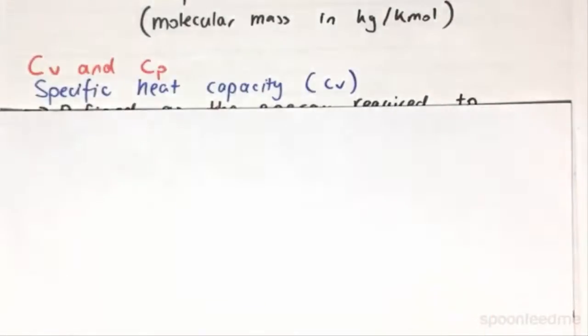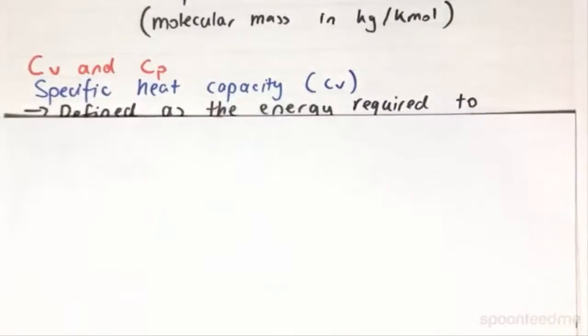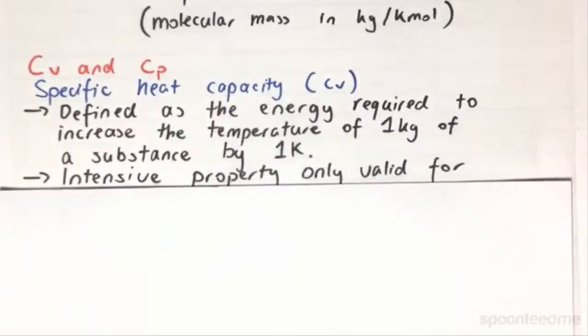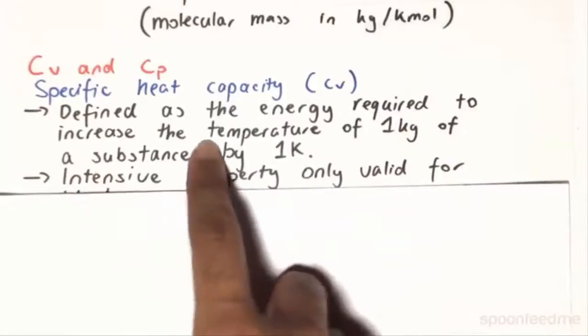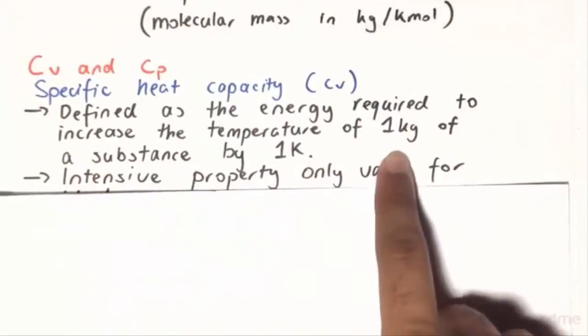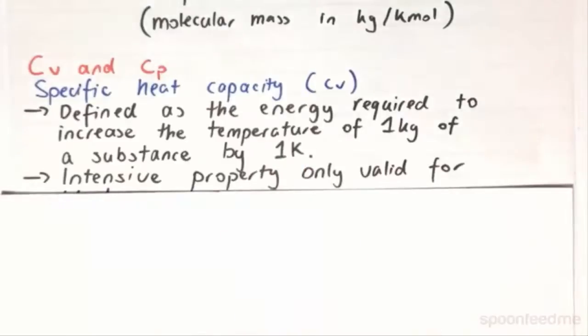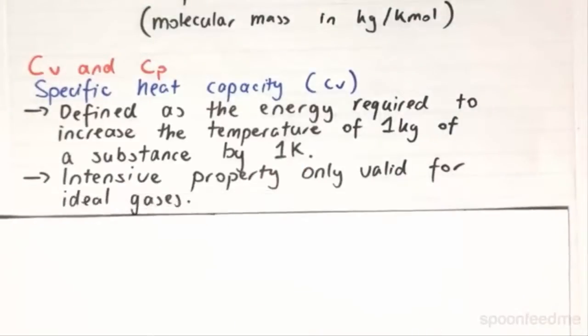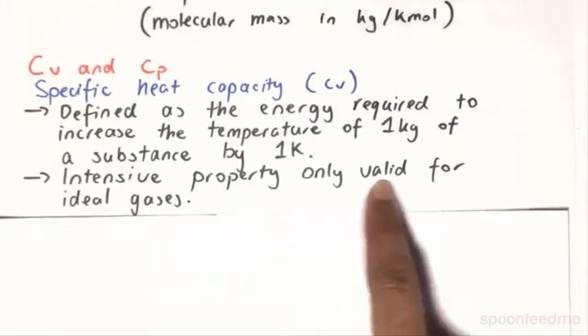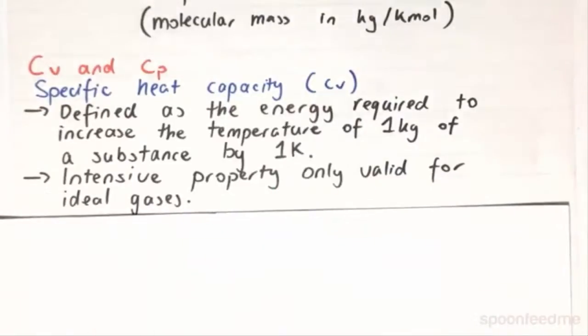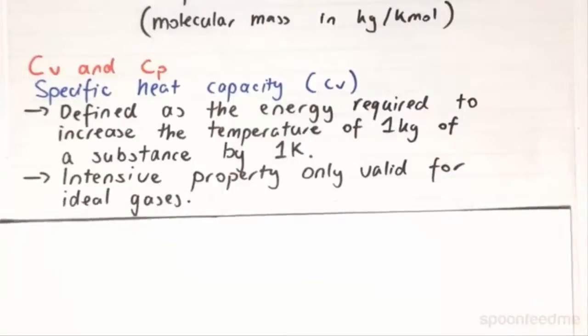So we move on now to Cp and Cv. Cv is referred to as the specific heat capacity. It is defined as the energy required to increase the temperature of one kilogram of a substance by one Kelvin or one degree Celsius, since one Kelvin is equivalent to a degree Celsius. It's an intensive property and is only valid for ideal gases.